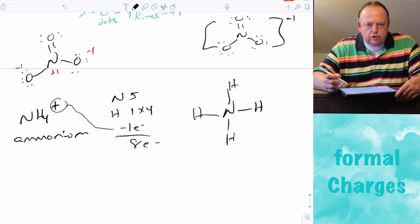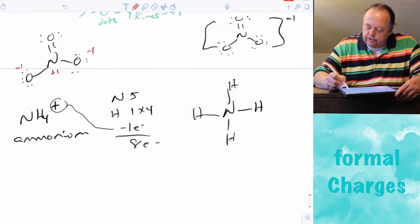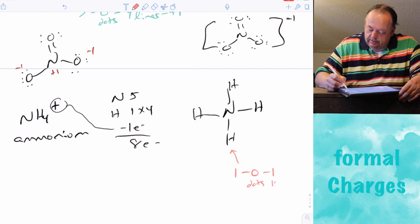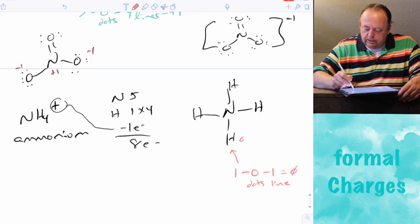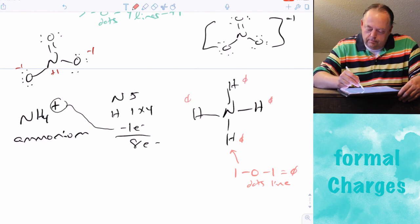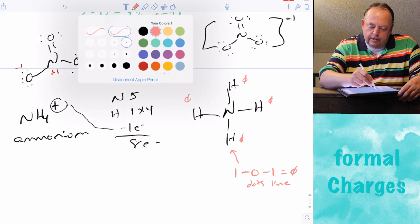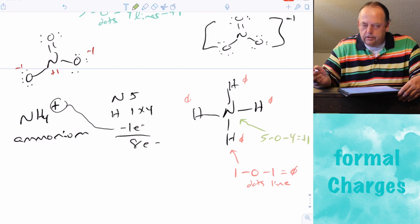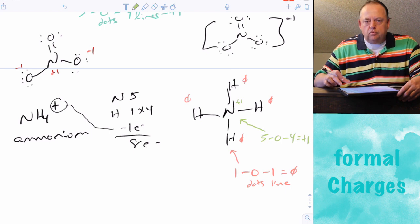Calculating formal charges: for each hydrogen — one valence electron minus zero non-bonded electrons minus one bond — equals zero. All four hydrogens have a formal charge of zero. For nitrogen: five valence electrons minus zero non-bonded electrons minus four bonds gives a formal charge of plus one.